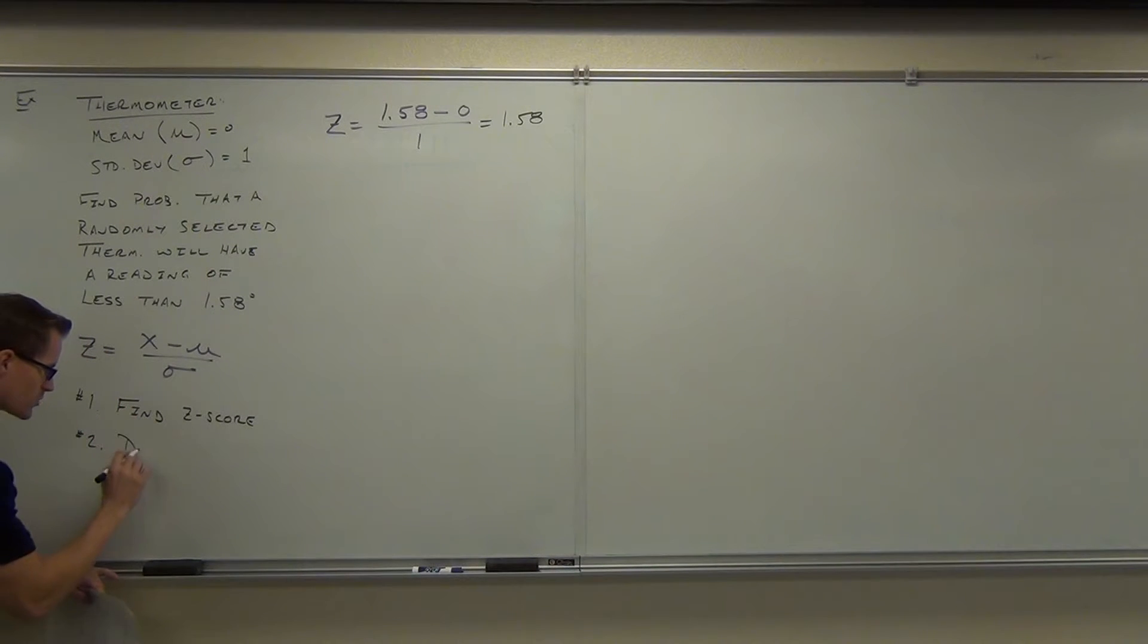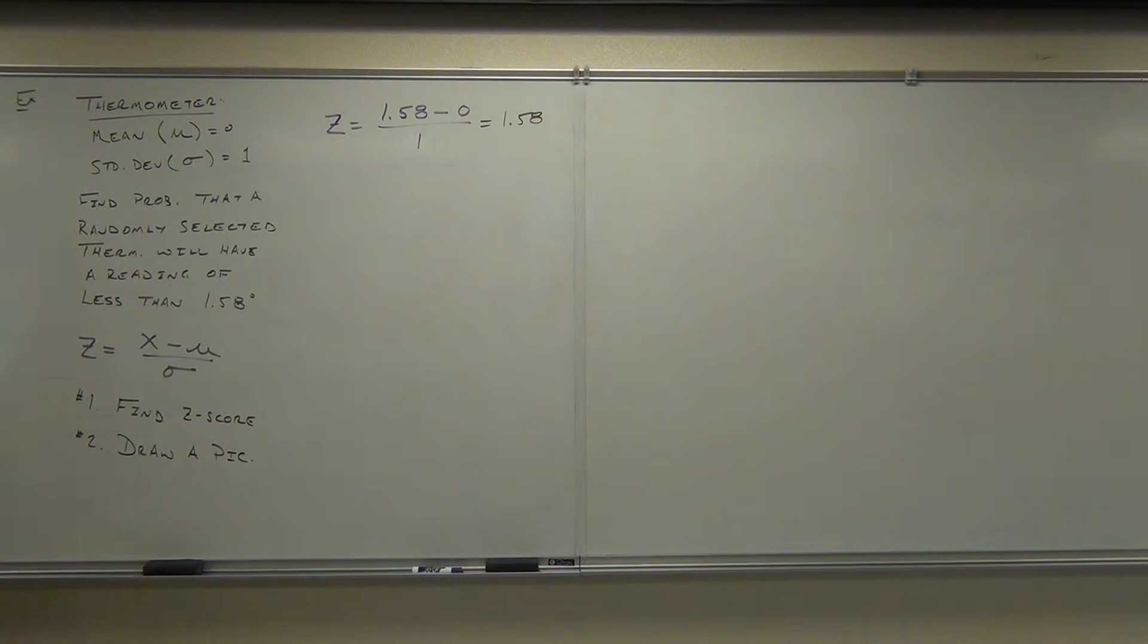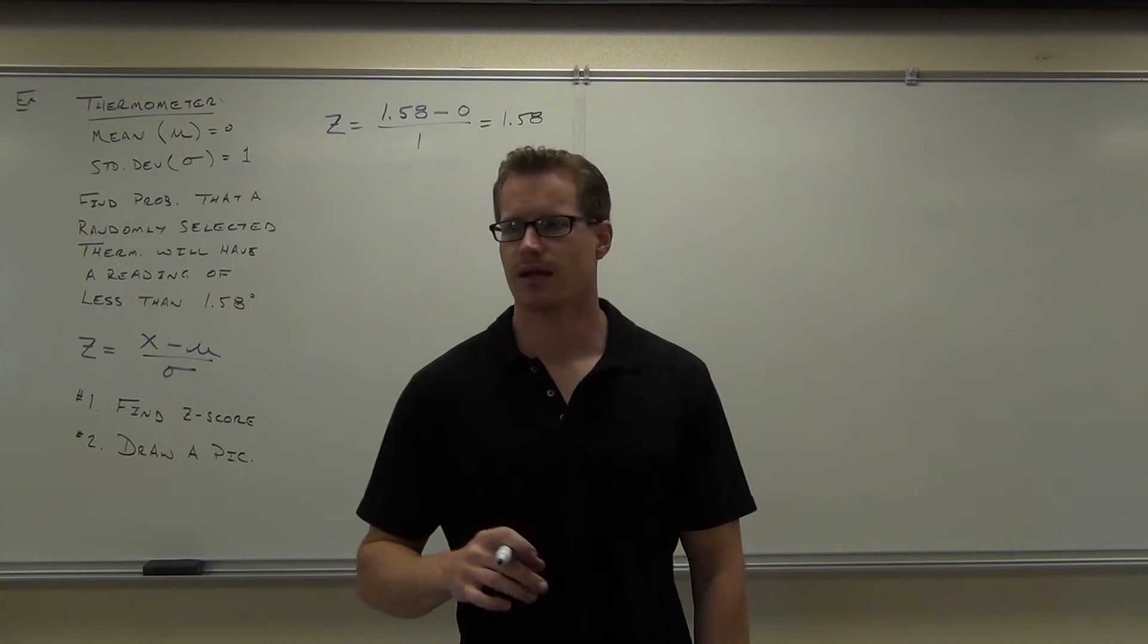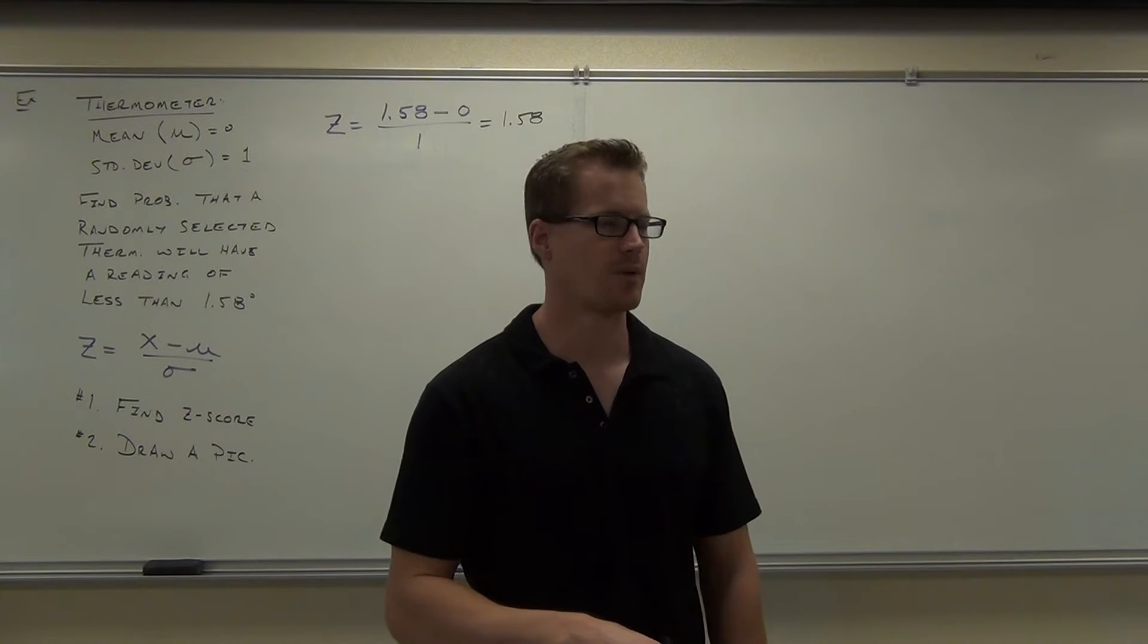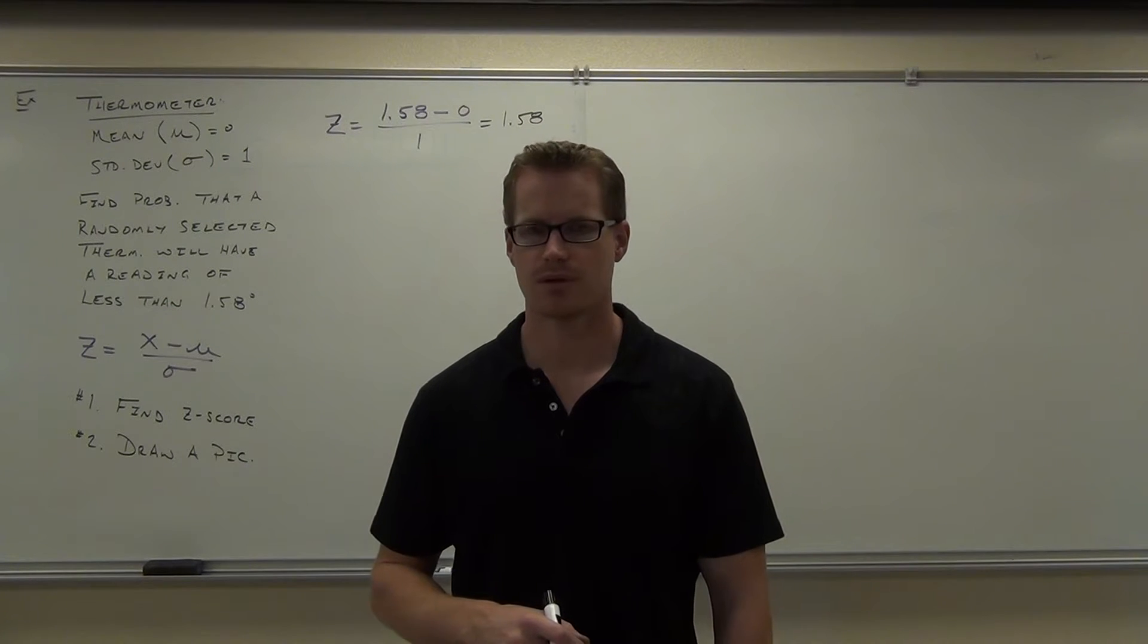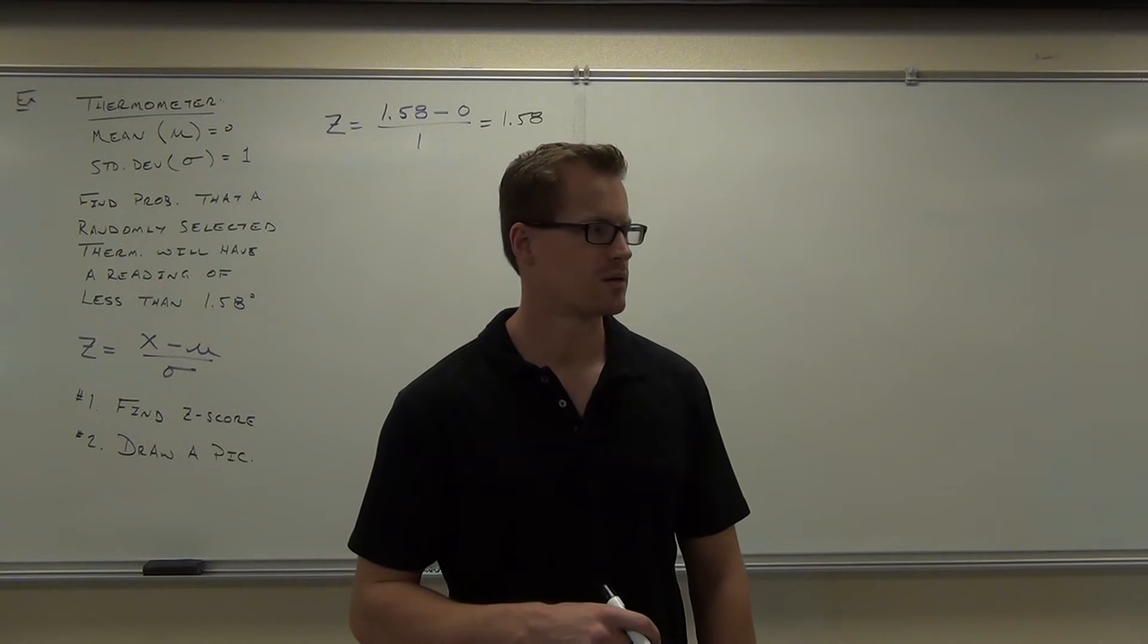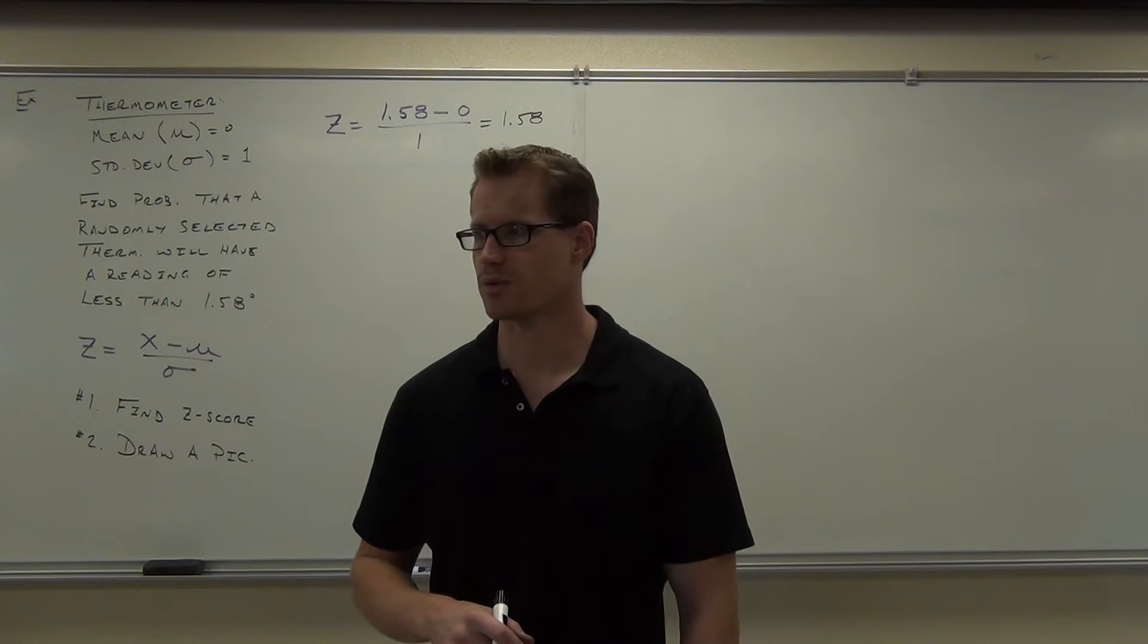Yeah, absolutely. Find a z-score, then draw a picture. Here's the picture I want to see for you. You kind of got to know these things. I'm going to refresh your memory on them from time to time. X stands for what in this particular chapter? Continuous variable. Good. And the z-score translates a normal distribution into what? That you've got to know as well.